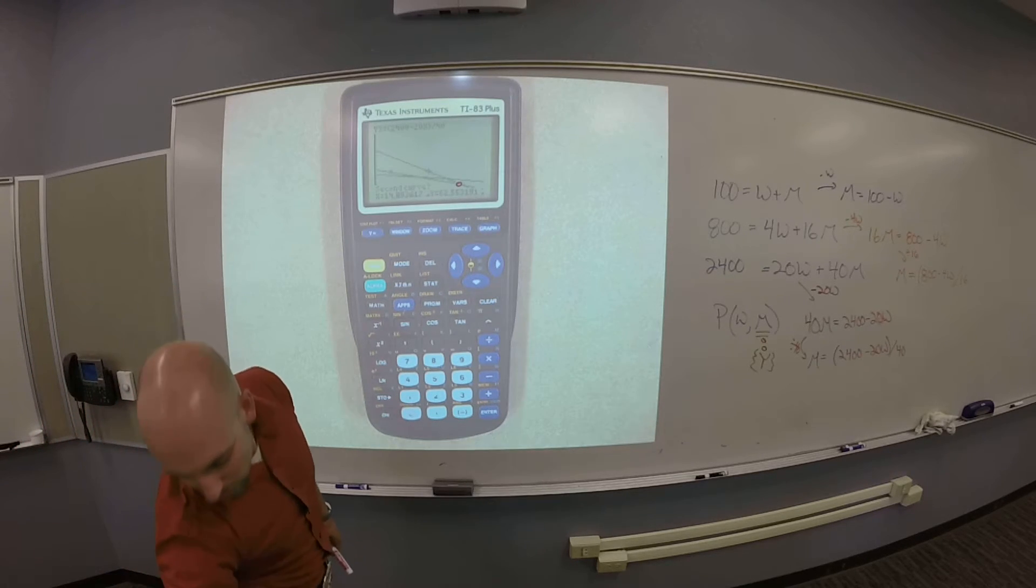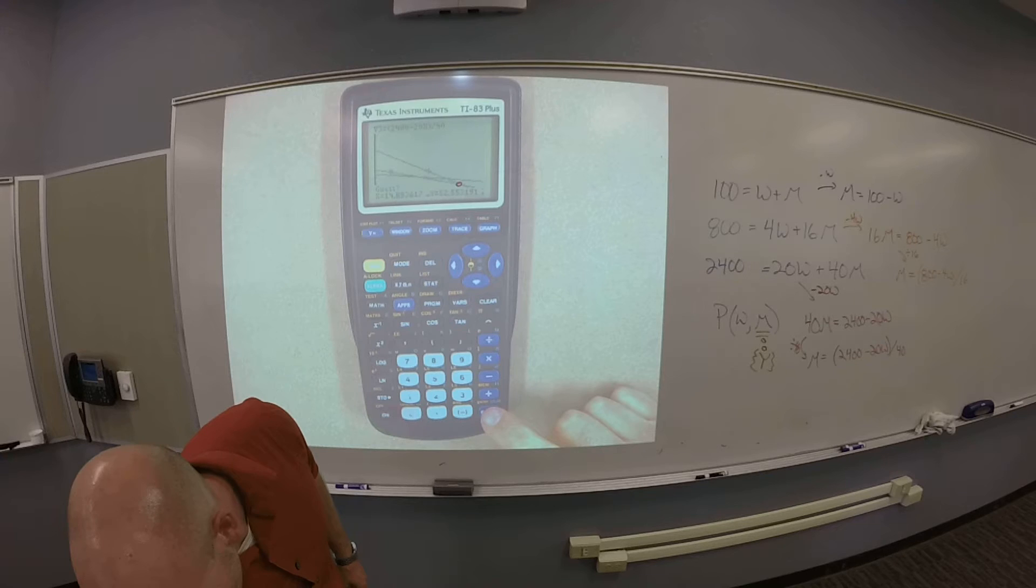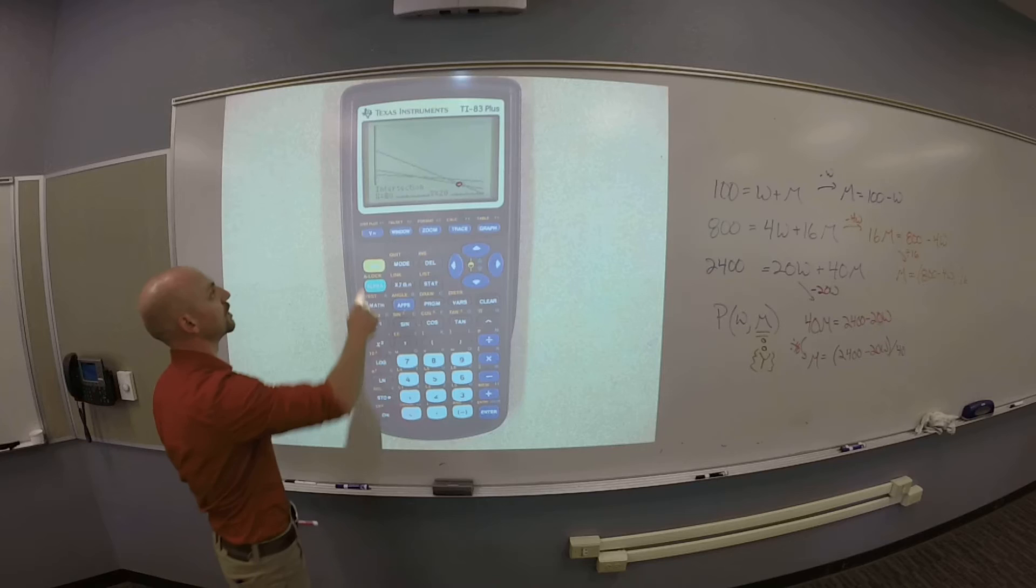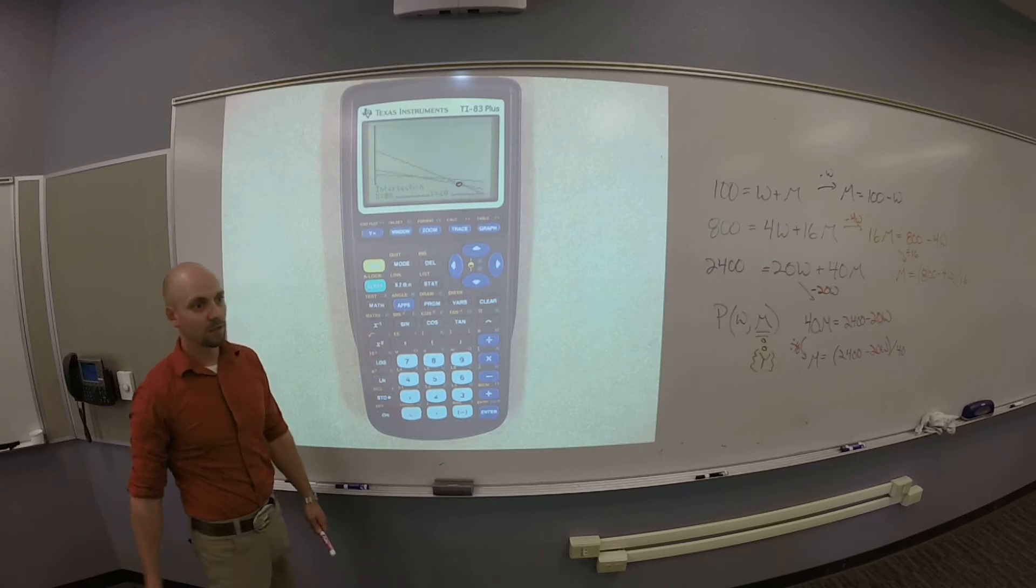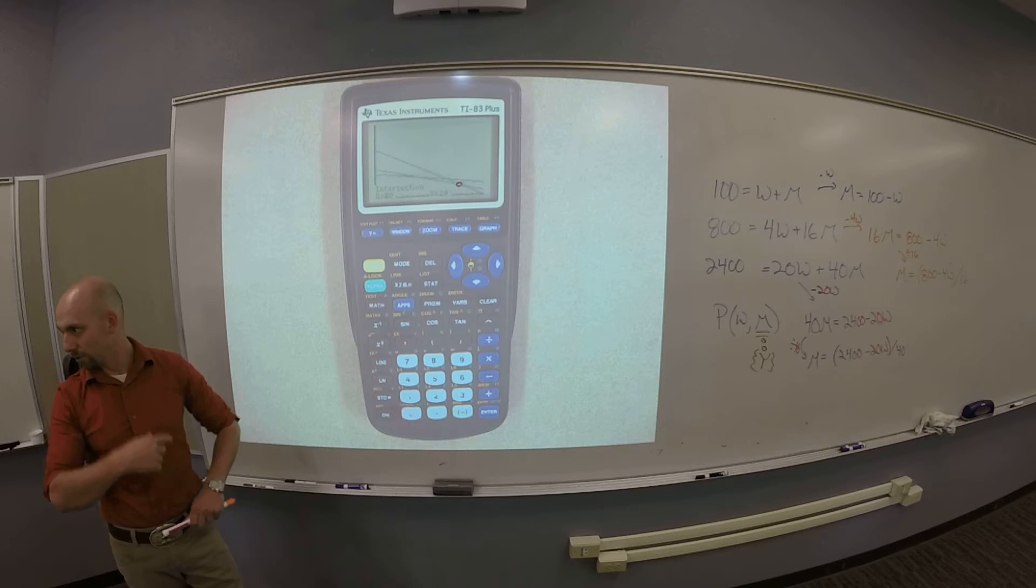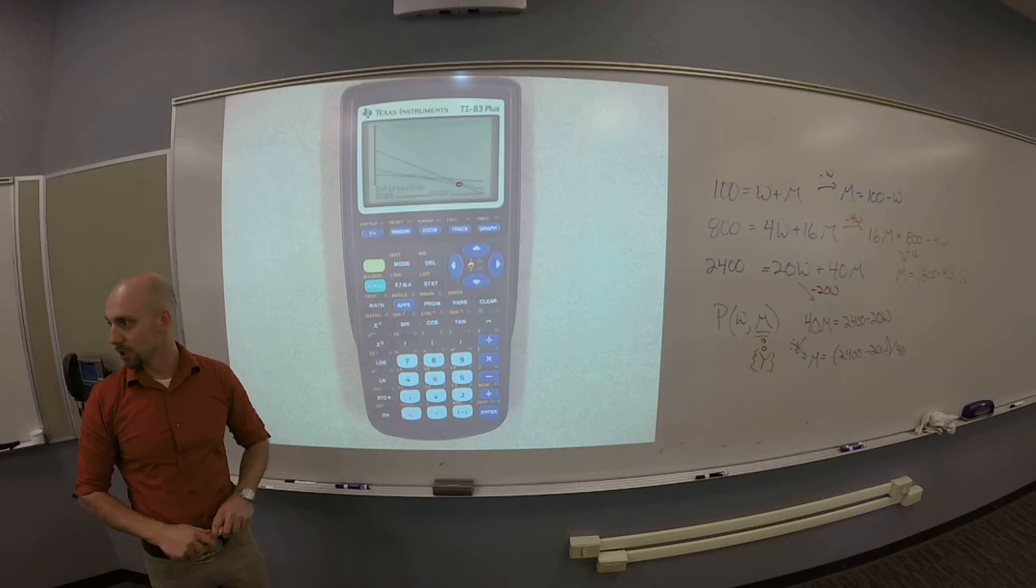I want to find that point. So, I hit enter on this, and I don't guess. I believe the computer should be guessing. So, it says X is 80, Y is 20. Cool. That was one of the points I needed, right? And then, you could go through the process again for the other intersection.